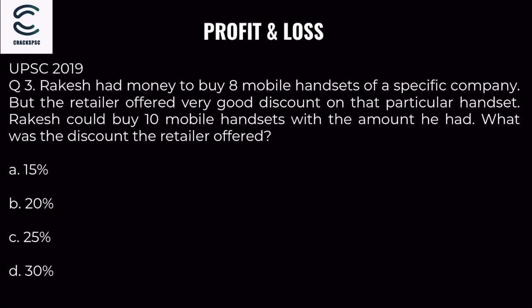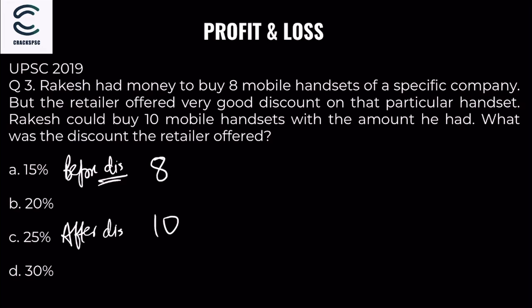Next question: Rakesh had money to buy 8 mobile handsets. The retailer offered a very good discount on that handset and Rakesh could buy 10 mobiles instead. Let's assume each mobile costs some price. Rakesh's total money stays the same in both cases.